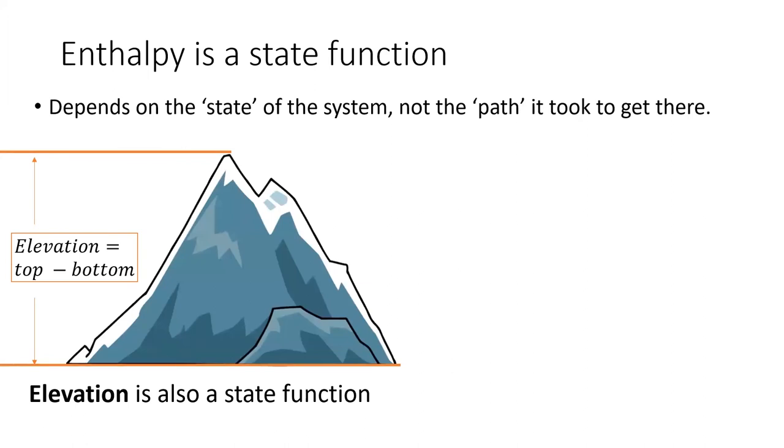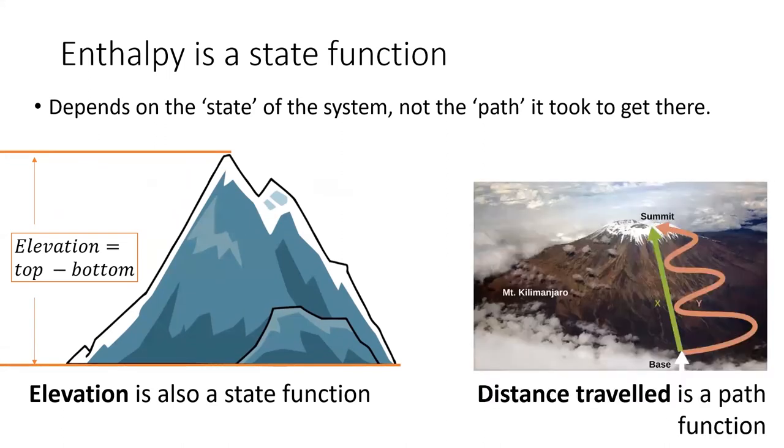An example of a state function is elevation. The elevation of a mountain is the top of a mountain minus the bottom of the mountain, regardless of how you travel to get there. On the other hand, distance traveled is a path function. A long, winding path to the top will have a higher distance traveled than a direct route. But regardless of which path you take, the elevation at the top is the same.